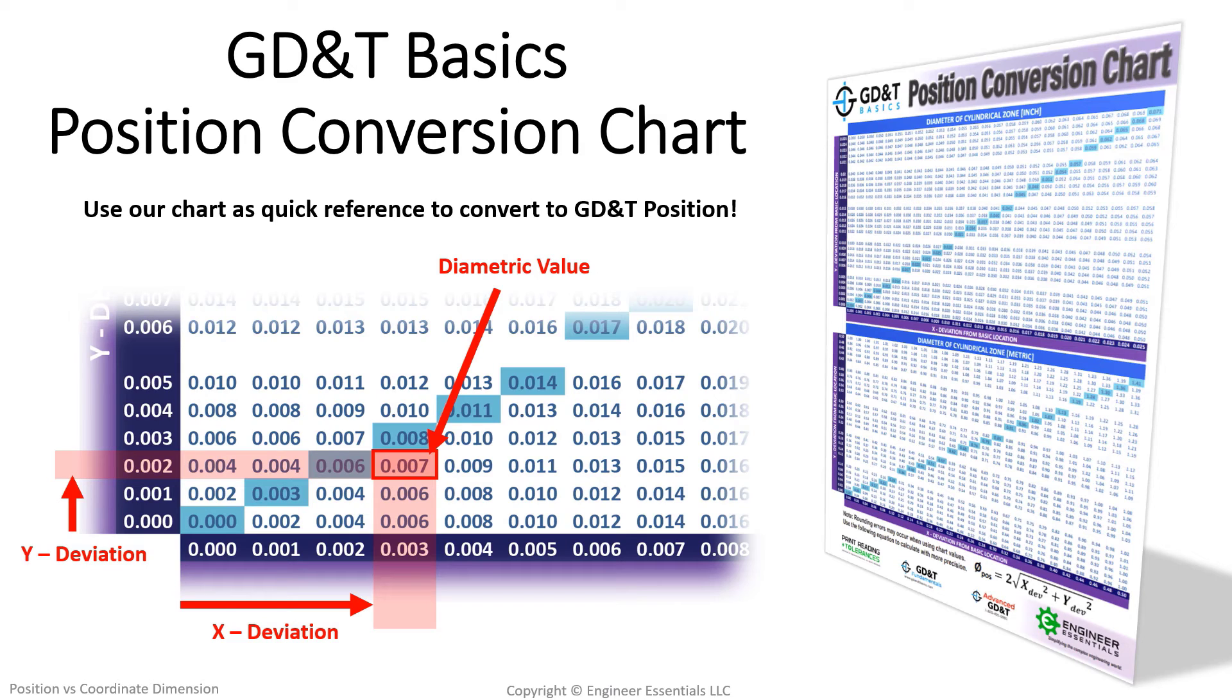Additionally, if you are spot-checking a part and want to know if you have met the total diametric deviation requirement for a feature, just measure the part as you would using coordinate dimensions, then look up your actual deviations in x and y to find the actual diametric deviation. Then compare it to the listed value in the feature control frame to check and see if you are passing specifications.